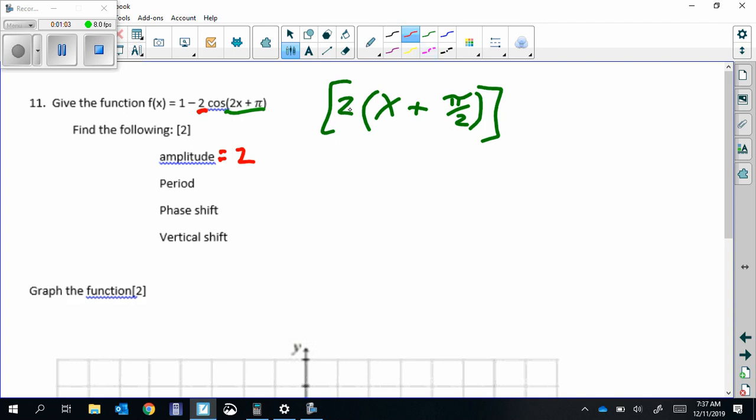The period comes from b, which is this number here in green. Period is always 2 pi over b, so 2 pi divided by 2. Period is pi.